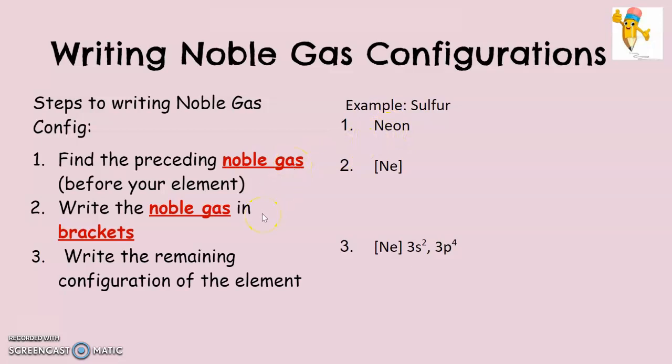Once you have your noble gas, you're going to put that noble gas into brackets. So its chemical symbol is going to go into brackets. So we're going to put a bracket around neon, and that's really important because it just shows us it's noble gas configuration. And what you're basically saying is the entire electron configuration of neon plus the extras that you need to get to sulfur. Because if you stopped right here, this is just shorthand for saying the electron configuration for neon.